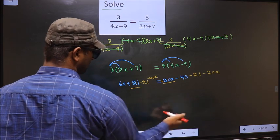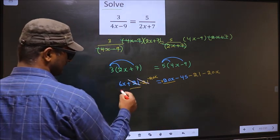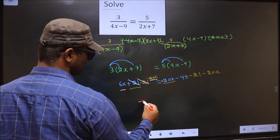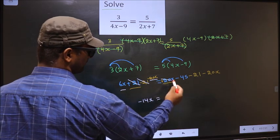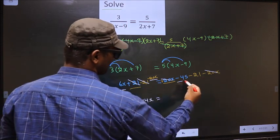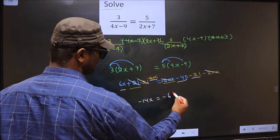Now plus 21 minus 21 cancel out. 6x minus 20x will result in minus 14x equal to... plus 20x minus 20x cancel out. Minus 45 minus 21 will result in minus 66.